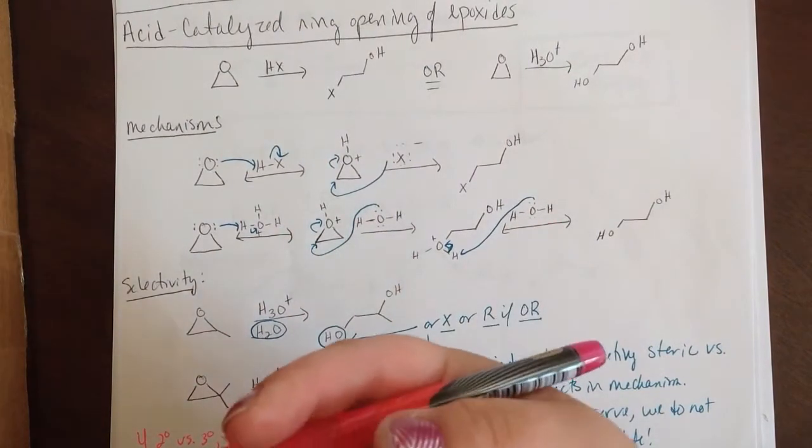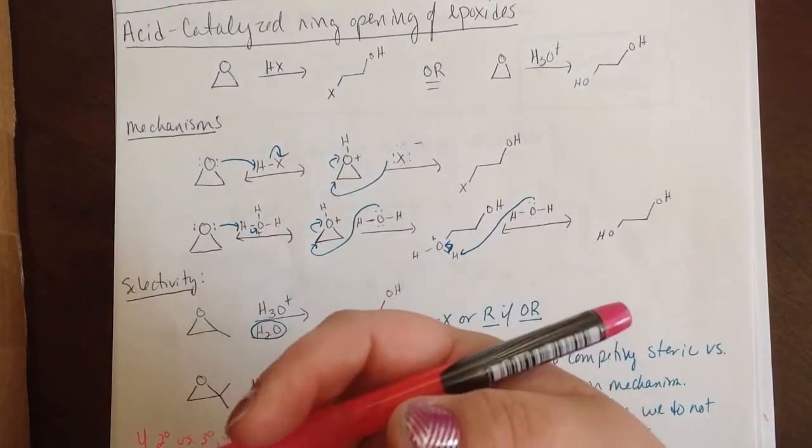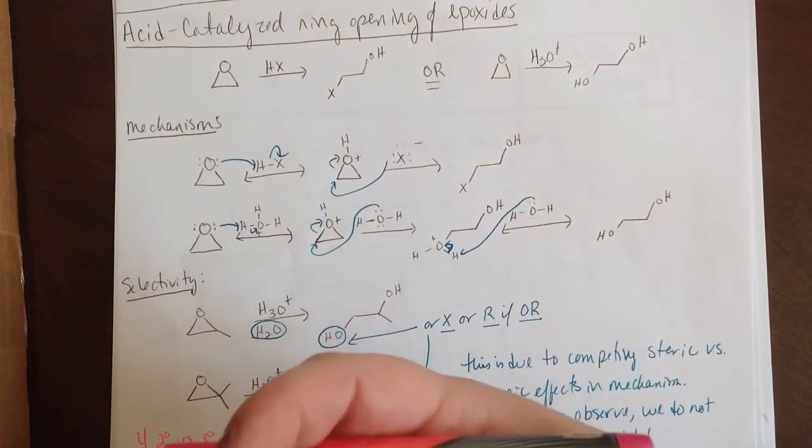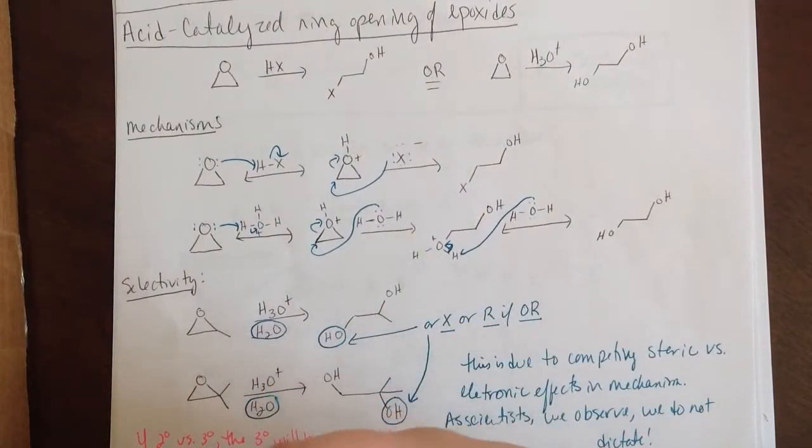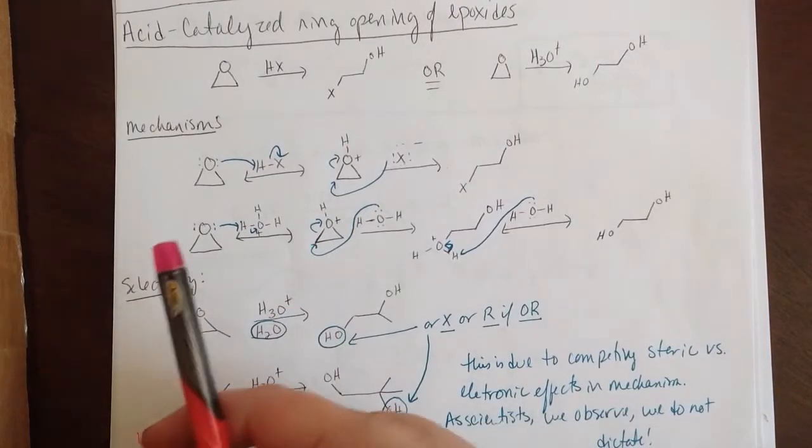Why do we need both acidic and basic conditions? Because sometimes part of your molecule is acid or base sensitive. So you need to be able to use it in one direction or the other to achieve your desired results.